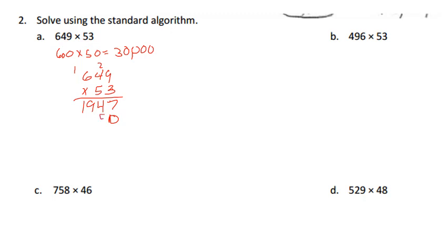5 times 4 is 20 and 4 is 24, carry the 2. 6 and 5 is 30 and 2 is 32. We add it up: we're gonna go 7, 9, 13, 4, and we have 34,397. And our answer is reasonable because we said 30,000.